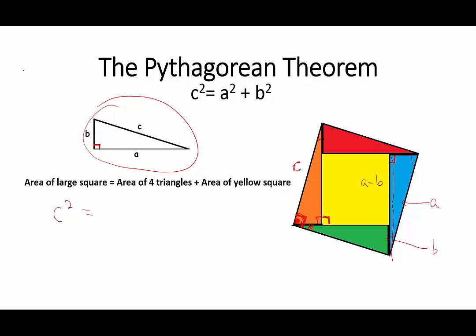Well, the area of each triangle is a times b over 2. We have four of those, so 4 times ab over 2 is equal to 2ab. And the area of the yellow square, the side is a minus b, so it's a minus b squared.